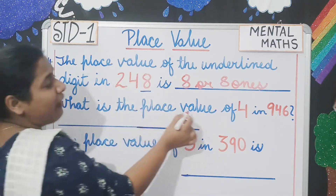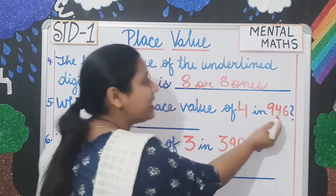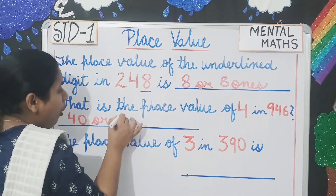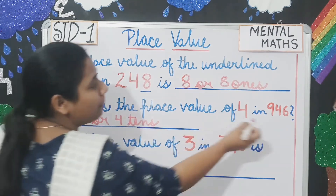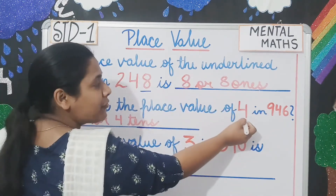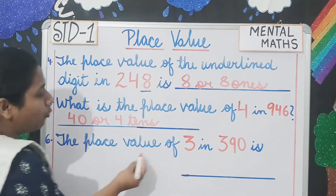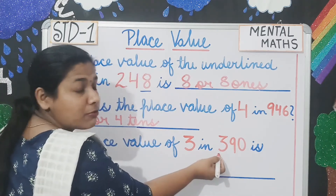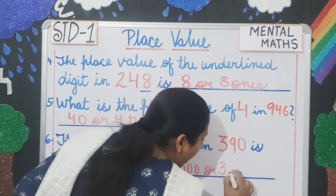What is the place value of 4 in 946? The place value here is 40, or 4 tens, because it is in the tens place. Next: the place value of 3 in 390 — the place value is 300 or 3 hundreds.